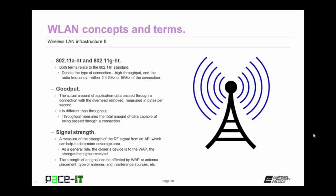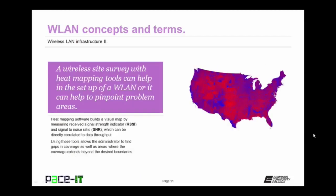Then we have signal strength. It's a measure of the strength of the radio frequency signal that comes from an access point, which can help to determine the amount of area that can be covered by that access point. As a general rule, the closer a device is to the wireless access point, the stronger the signal received. This strength of signal can be affected by access point or antenna placement, the type of antenna used, and interference sources. A wireless site survey with heat mapping tools can help in the setup of a high quality wireless LAN or pinpoint problem areas.